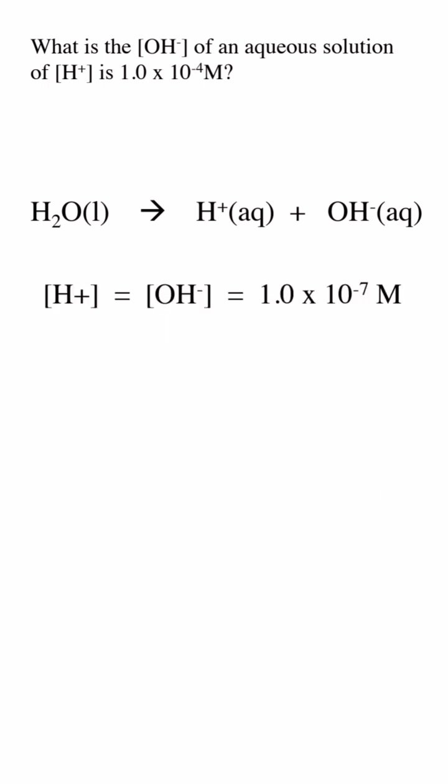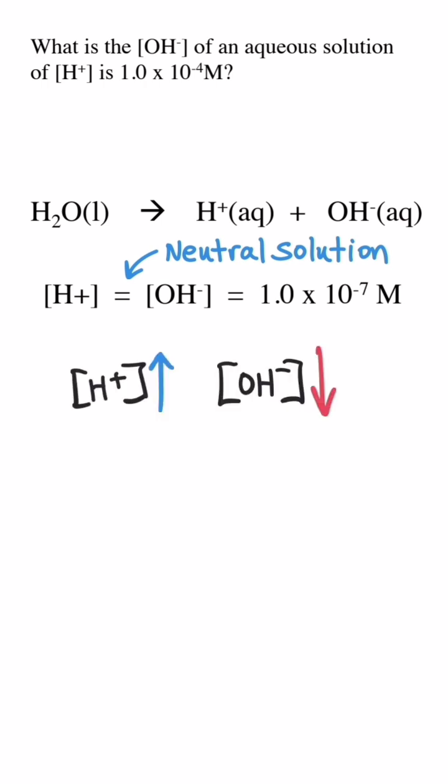In a neutral solution like pure water, the concentration of hydroxide and hydrogen ions are the same, and if one of the ions increases in concentration, the other drops.